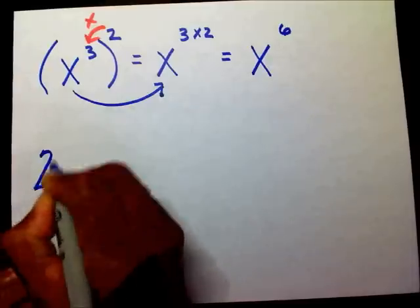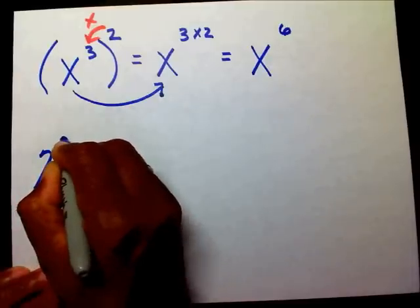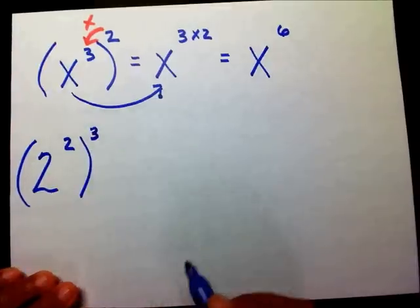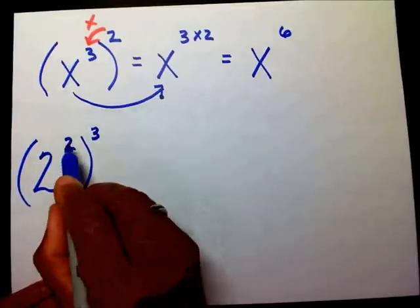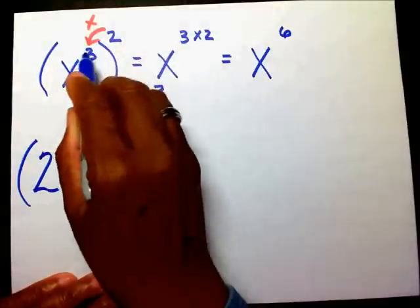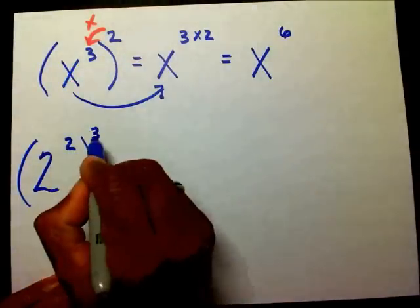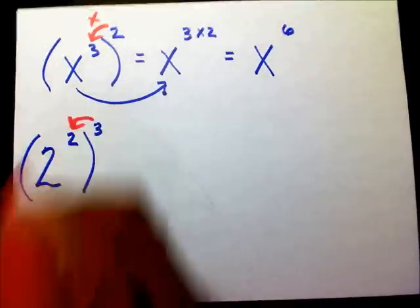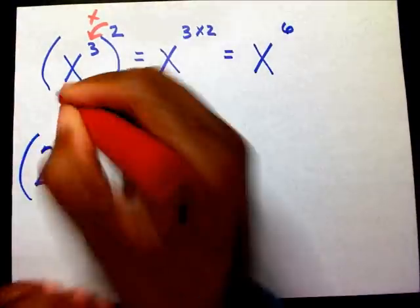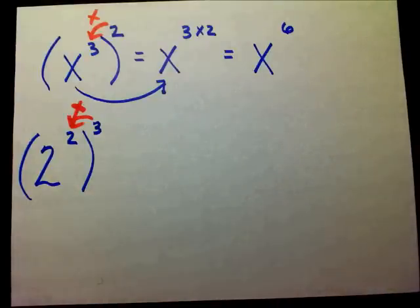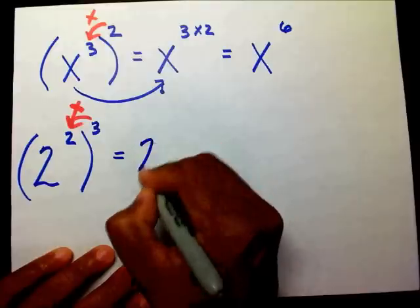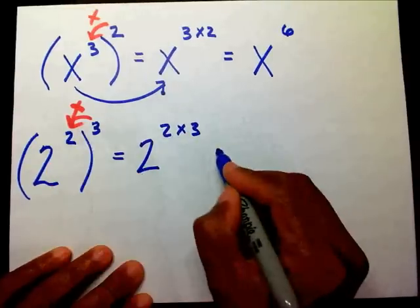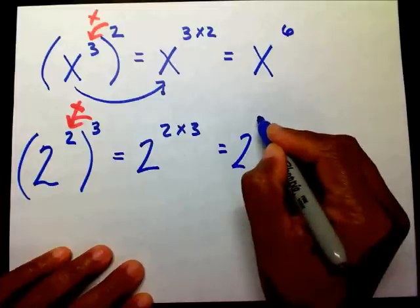What if I had two to the second raised to the third? My rule states that if I have an exponent on the inside and outside, I'm going to multiply my exponents. That's going to give me two to the two times three, which is two to the sixth power.